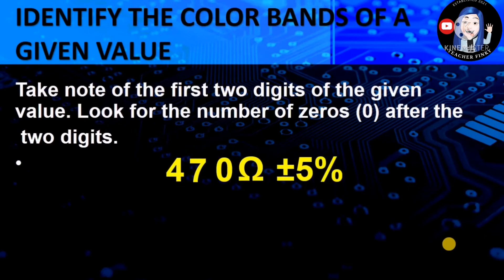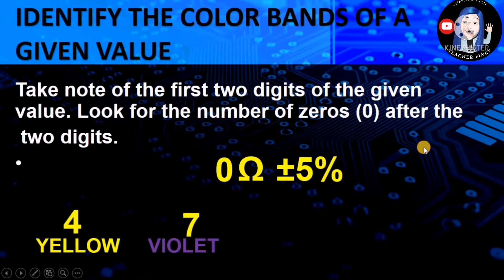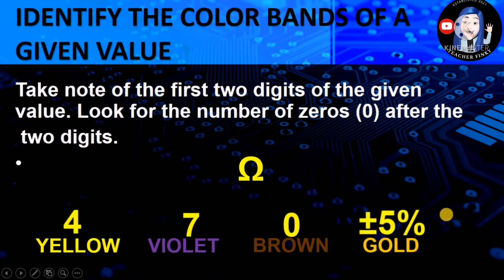Take note of the first two digits of the given value. As an example, we have 470 ohms plus/minus 5%. The first two digits — 47 — will be our first and second color: 4 as yellow, 7 as violet. The remaining 0 corresponds to brown, because brown in the multiplier represents 10, which has one zero. And for plus/minus 5%, the color is gold. So for 470 ohms plus/minus 5%, the color combination is yellow, violet, brown, and gold.